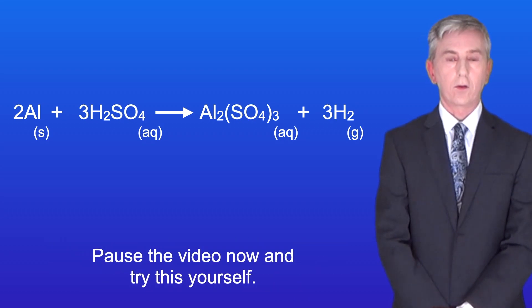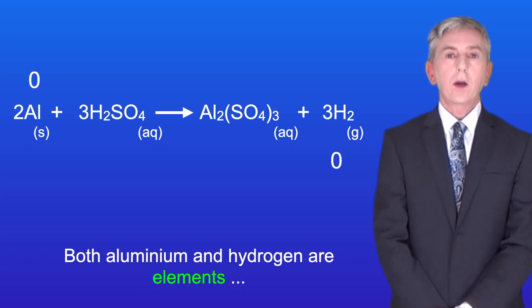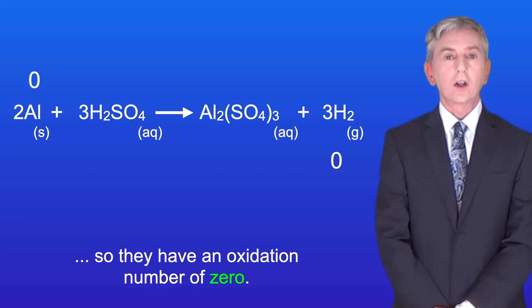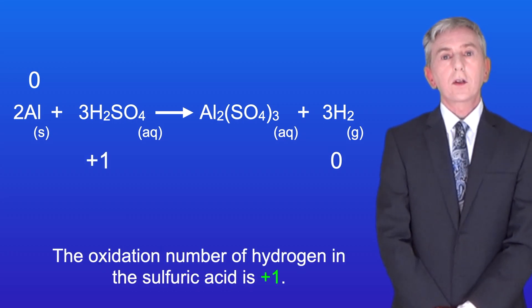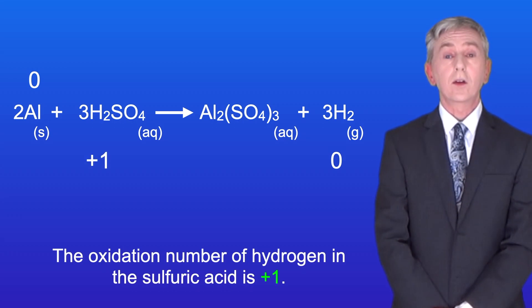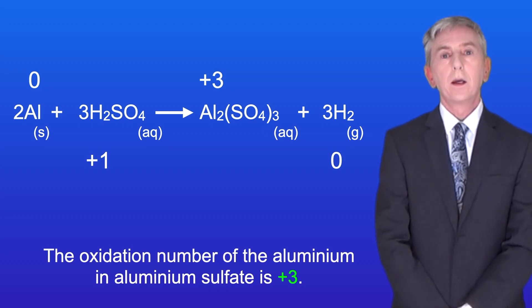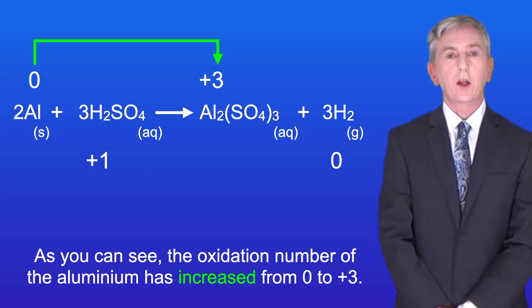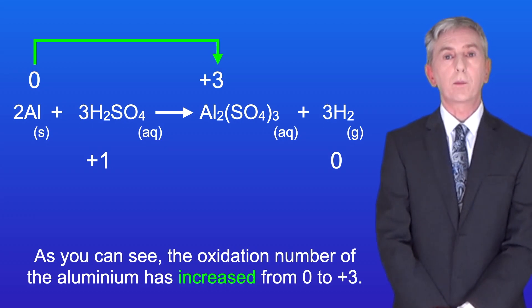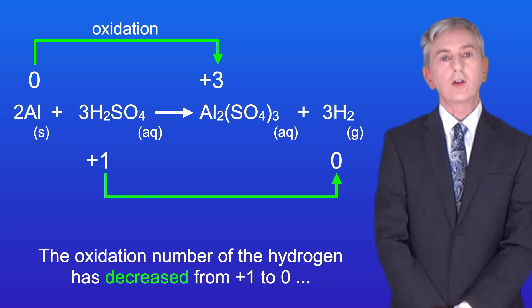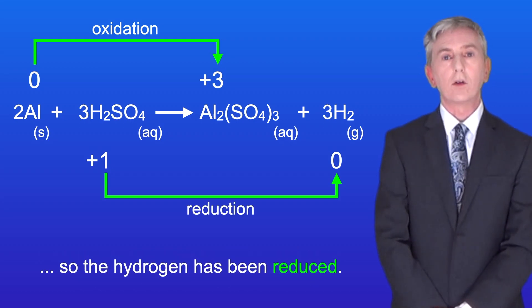Both aluminium and hydrogen are elements so they have an oxidation number of zero. The oxidation number of hydrogen in the sulfuric acid is plus one and the oxidation number of the aluminium in aluminium sulfate is plus three. The oxidation number of the aluminium has increased from zero to plus three so the aluminium has been oxidized. The oxidation number of the hydrogen has decreased from plus one to zero so the hydrogen has been reduced.